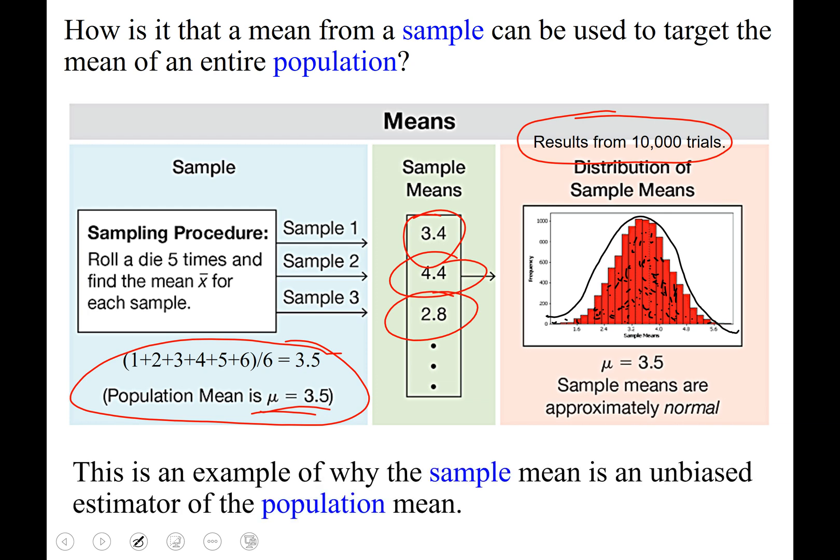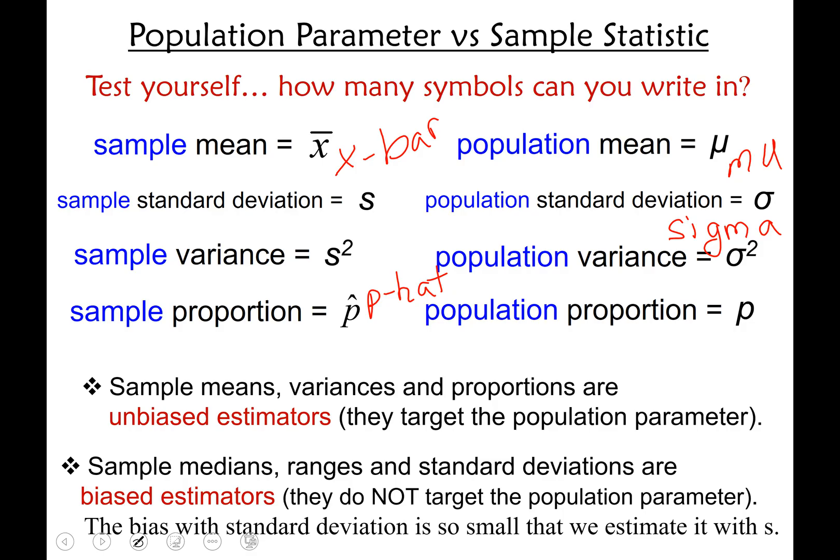So this is one example of why the sample mean is an unbiased estimator and you can use a sample mean to predict that the population mean is this sample mean. You're going to want to keep track of which estimators you can do that for and which ones you cannot. To be a good statistician you wouldn't want to use for example a median from a sample and then make a projection about the entire population's median based on that sample mean.